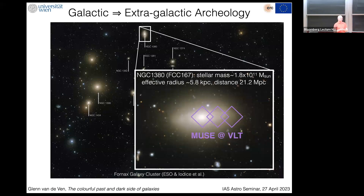We are heading towards what is often known as galactic archaeology. We've seen fantastic results, many driven by Gaia for our Milky Way, where we've uncovered merger events — the Gaia-Enceladus sausage — and can trace back the build-up of the Milky Way disk. This has so far been really focused on the Milky Way and M31 with resolved stellar measurements. What I want to convince you today is that the data quality and techniques we are developing are now good enough to extend this to more nearby galaxies.